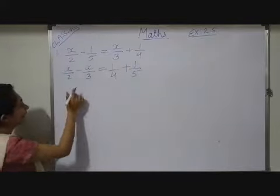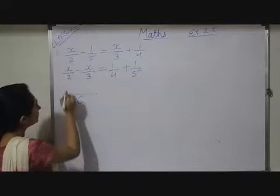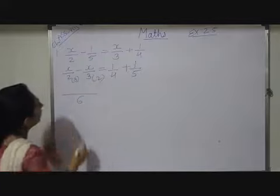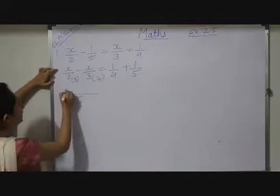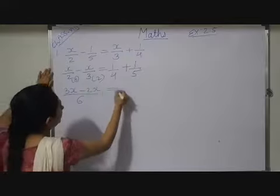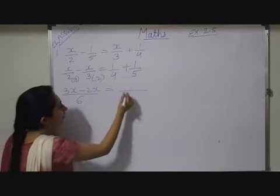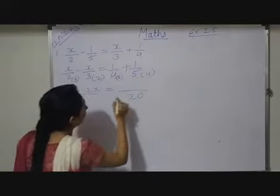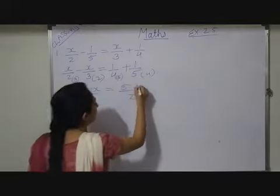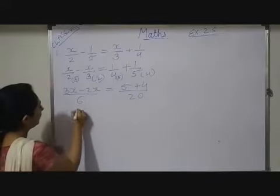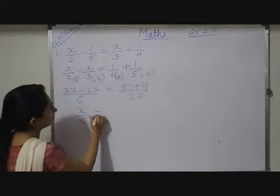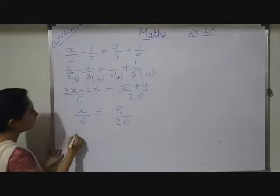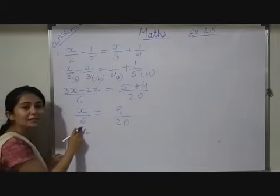Now here take LCM, your LCM will be 6. So here this number you have to multiply by 3. This one you will multiply by 2. So here you will get 3x minus 2x which is equals to here again your LCM will be 20. So this one you will multiply by 5 and this one by 4. So 5 plus 4. So I will solve it. I will get x upon 6 which is equals to 5 plus 4, 9 upon 20.